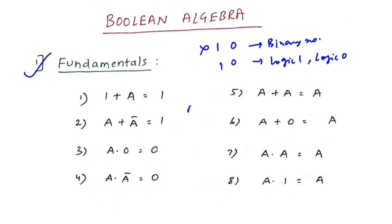The variable A can take both values one and zero. Point one: 1 + A = 1. This means whether you are adding 1+0 or 1+1, the answer is still one, because it is not binary — it is logic one and logic zero.